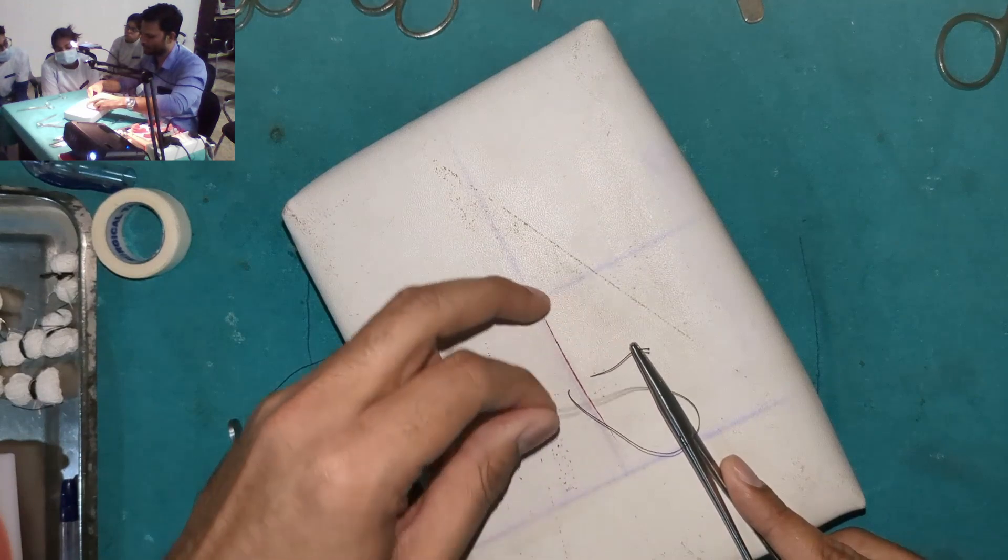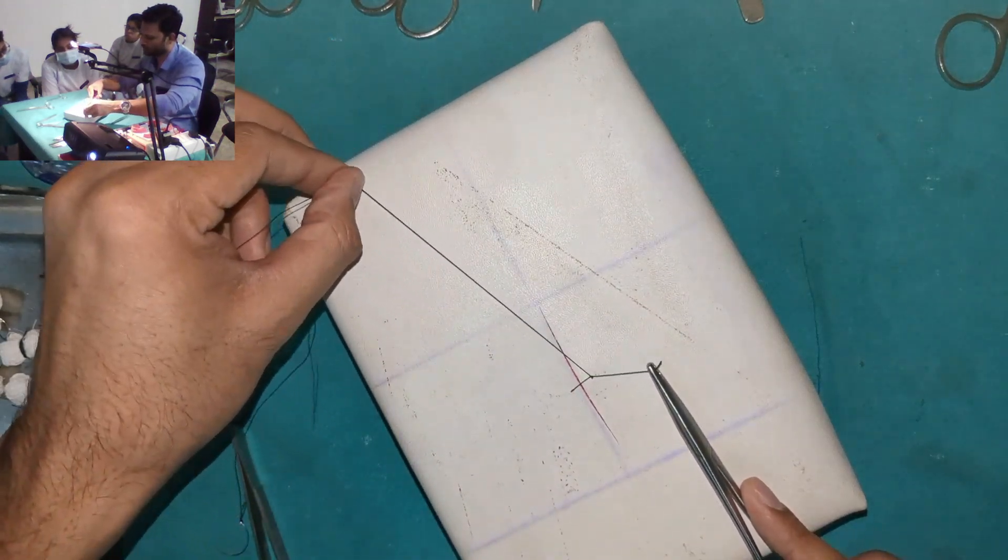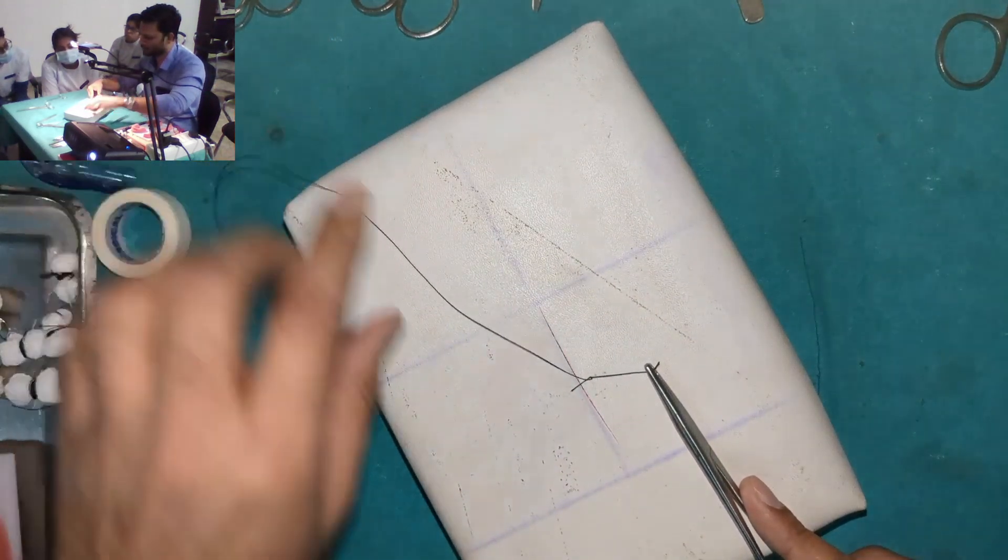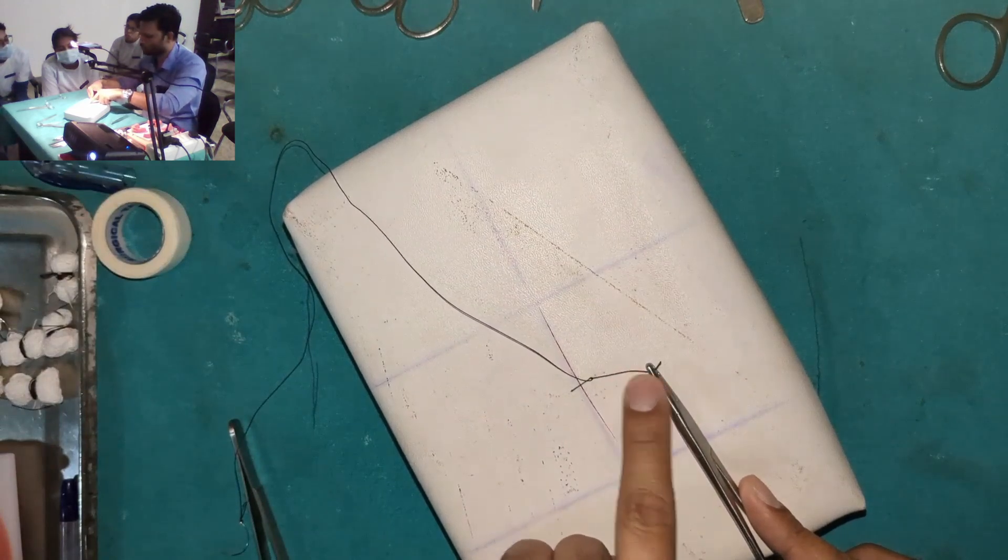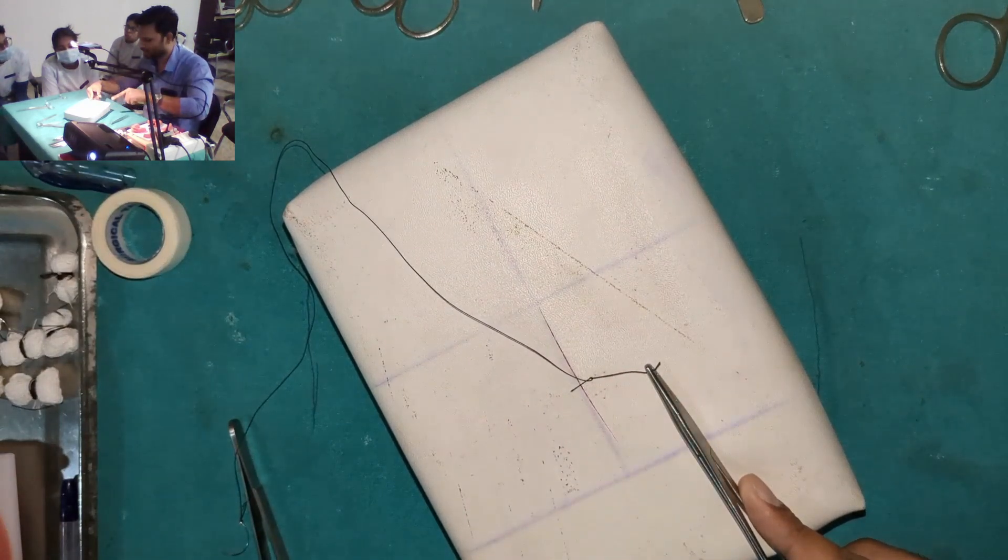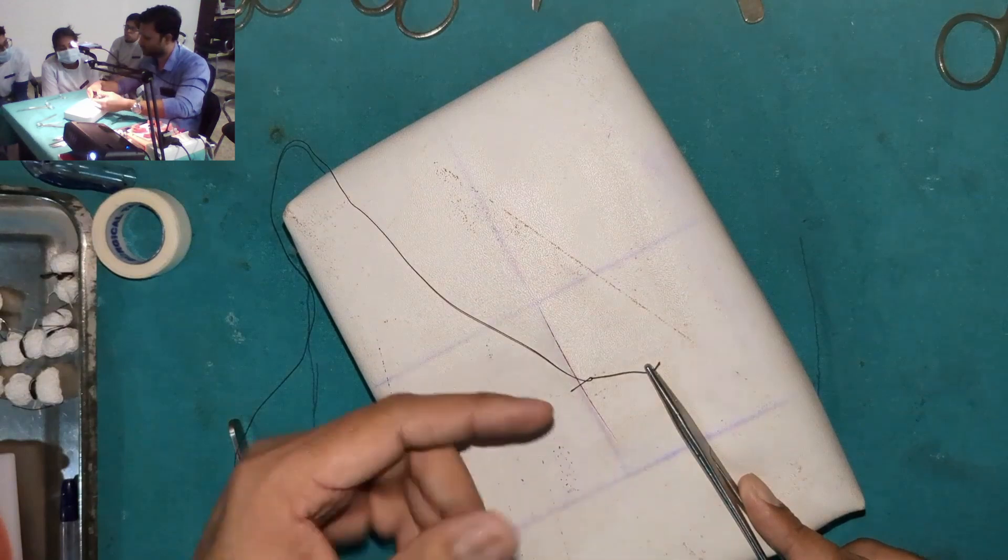Now I'm going to keep it slightly taut, and when I pull the suture, can you see, automatically the knot is going there. This thread is going to act as a guide. It is going to act as a guide for the knot.